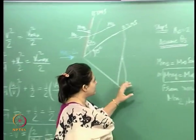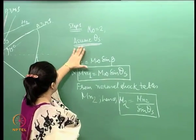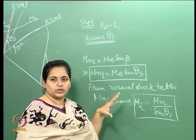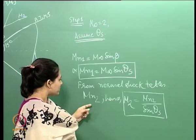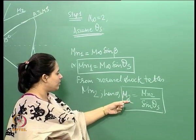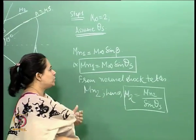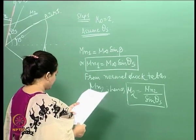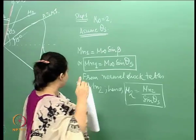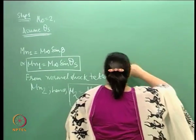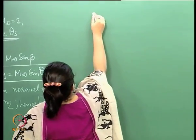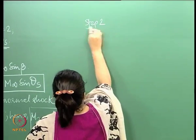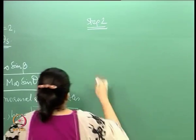Going back: what we have done here is assumed theta_s and used the normal shock tables to find the Mach number behind the shock wave. Let us move to step 2.